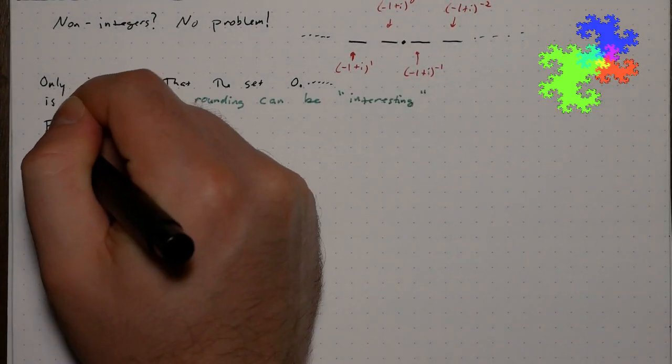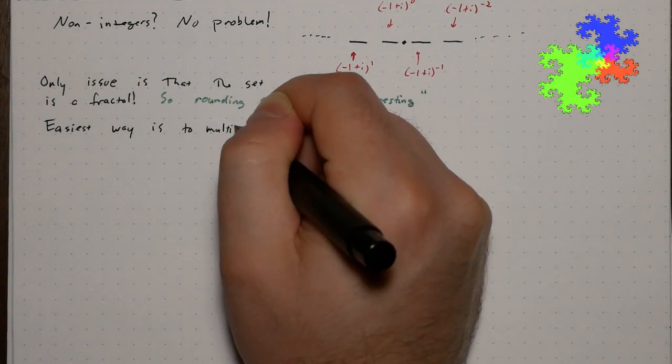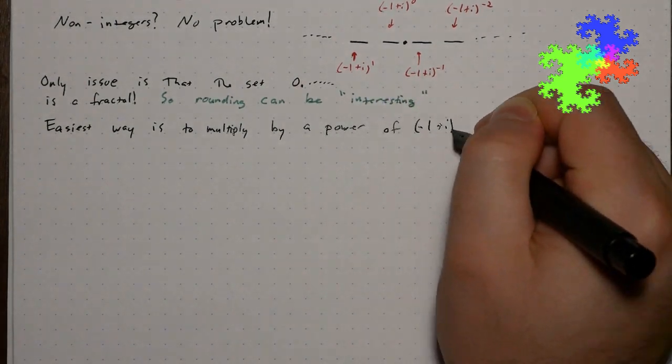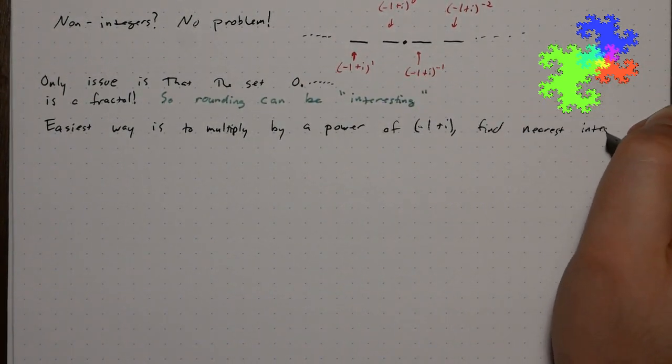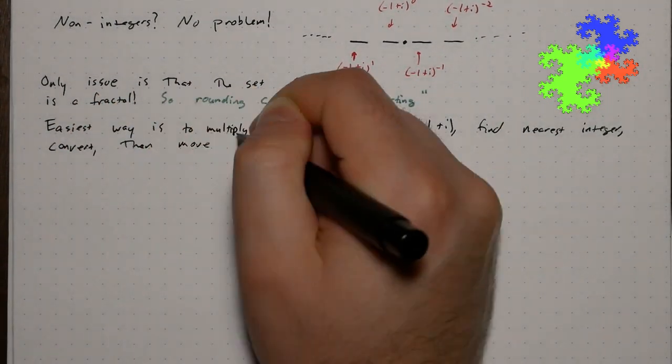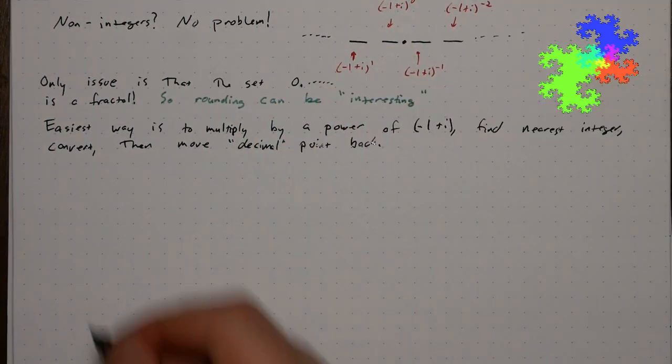We're going to ignore that for now. What we'll do is we'll multiply by a power of negative 1 plus i, convert the nearest integer, and then we'll just slide the radix point back.